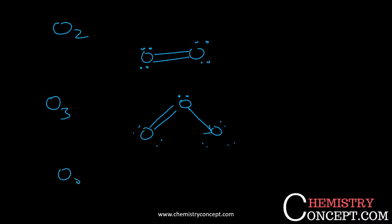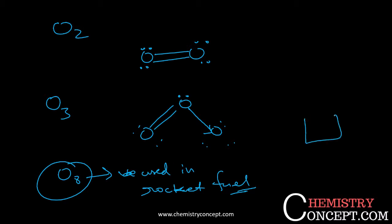You may be surprised that O8 is known and this is stable also and used in rocket fuel. The structure of O8 is like a cube, where the oxygen is at each corner. This is the structure of O8, where the oxygen is at the corners.